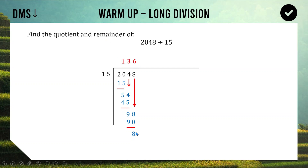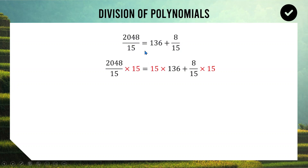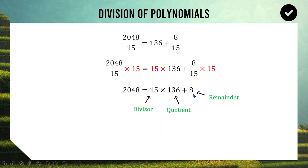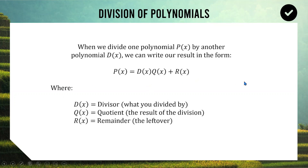So 2048 divided by 15 gives us a quotient of 136 with a remainder of 8. We can write 2048 divided by 15 as 136 and 8 fifteenths. Multiplying each piece by 15, we can rewrite this as: 2048 equals 15 lots of 136 plus 8. The three parts have specific names: what we divided by is the divisor, the result on top is the quotient, and the bit left over is the remainder. Now we're going to apply this process to polynomials using the same DMS Drop.